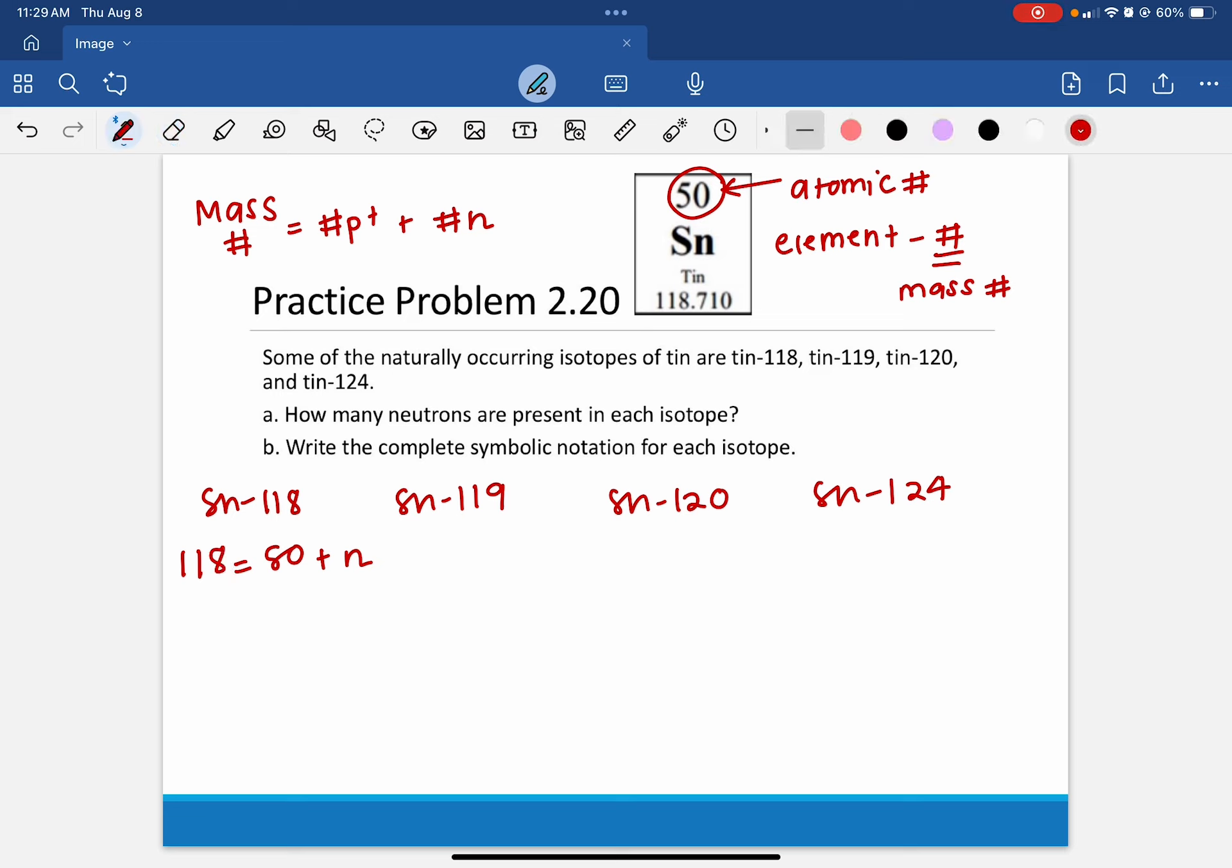So 50 plus the total number of neutrons. And we can do this for every single one of these, and it will only change just by the mass number. So 119 equals 50 plus X. 120 equals 50 plus X. 124 equals 50 plus X.